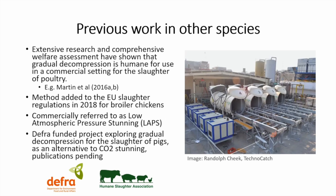The potential of hypobaric hypoxia has been studied previously in both poultry and pigs. Extensive research, including a full comprehensive welfare assessment, showed that gradual decompression is humane for use commercially in the slaughter of broilers. This was validated using a multifaceted approach assessing behavioural, physiological and neural indicators of loss of consciousness, and as such the method is now permitted for use across the EU for the slaughter of broiler chickens up to four kilograms. The recently funded DEFRA project also explored gradual decompression as an alternative to stunning pigs with carbon dioxide gas. However, unlike findings in poultry, results suggest that decompression does not offer a humane alternative at this time.